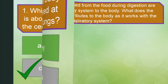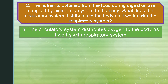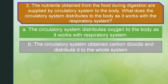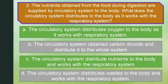Number two. The nutrients obtained from the food during digestion are supplied by cells. What does the circulatory system distribute to the body as it works with the respiratory system? Letter A: The circulatory system distributes oxygen to the body as it works with the respiratory system. Letter B: The circulatory system obtains carbon dioxide and distributes it to the whole system. Letter C: The circulatory system distributes nutrients to the body and works with the respiratory system. Or letter D: The circulatory system distributes waste to the body and works with the respiratory system. The correct answer is letter A: The circulatory system distributes oxygen to the body as it works with the respiratory system.